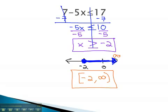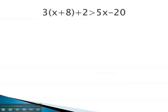Let's try another equation and see how it solves. This equation, being slightly more involved, will need us to simplify first, by distributing the 3 through the parentheses. This will give us 3x plus 24, plus 2 is greater than 5x minus 20.